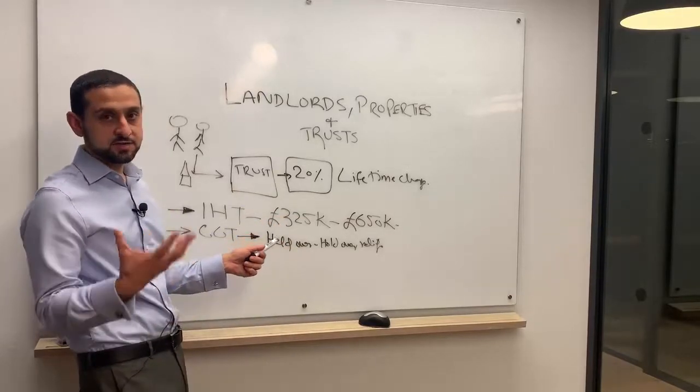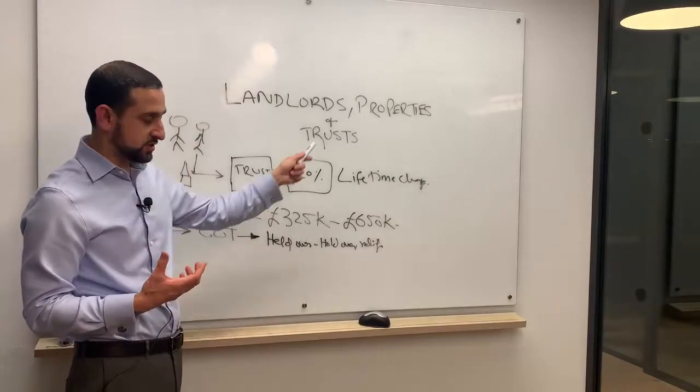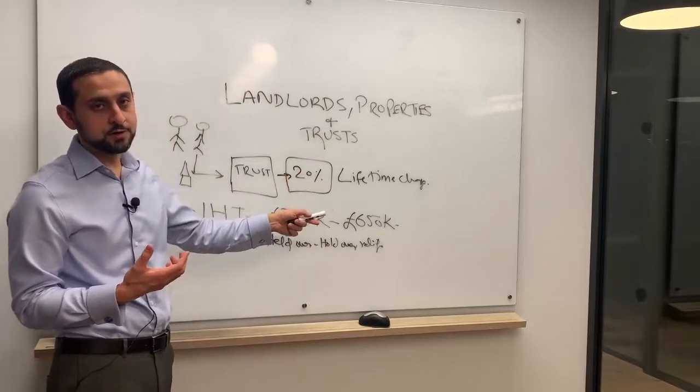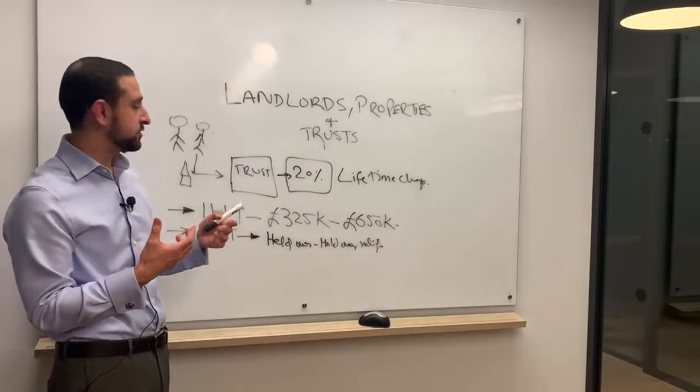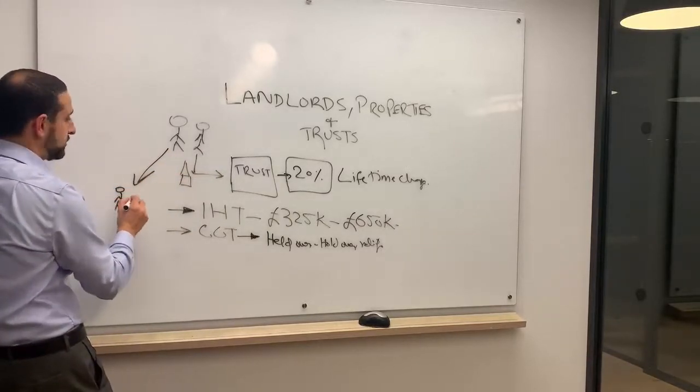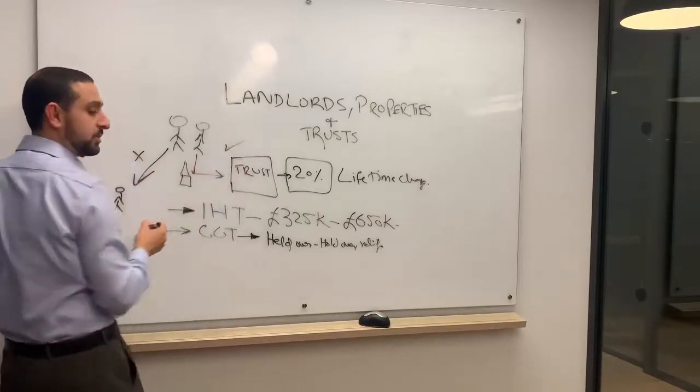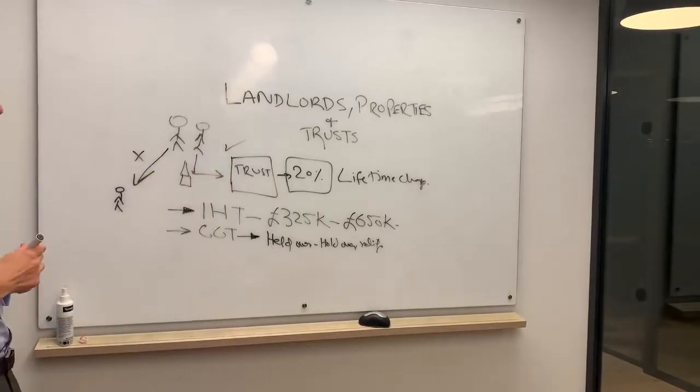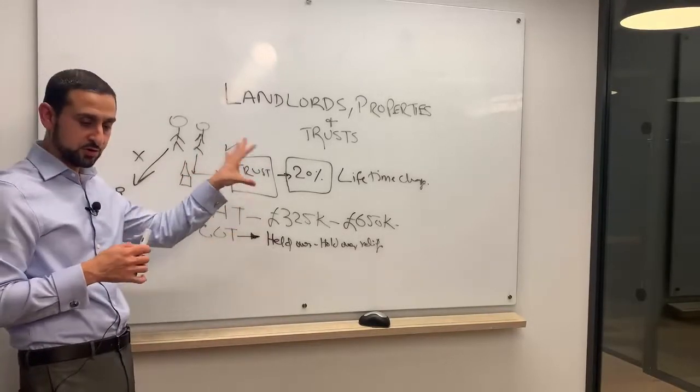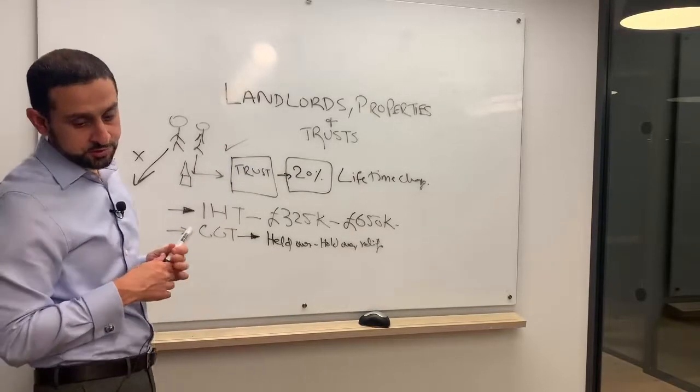When the property leaves the trust you can once again claim holdover relief. This can be a very tax-efficient mechanism. Property comes into the trust and goes out of the trust, and we claim holdover relief going in and holdover relief going out. So instead of having to transfer a property directly to the children, we use the trust mechanism. This could be expensive or tax-efficient - a very important lesson.